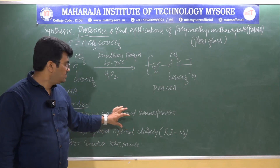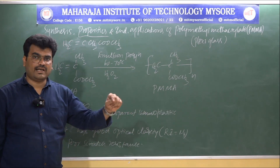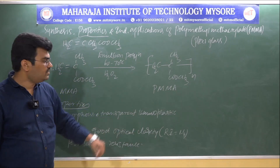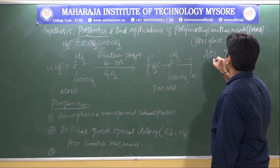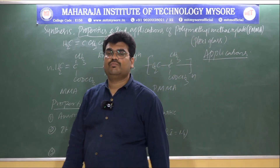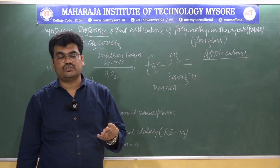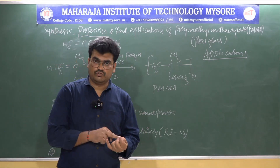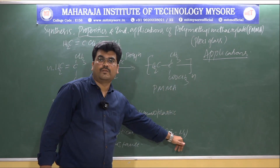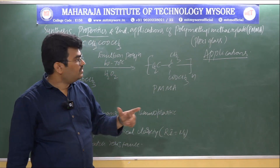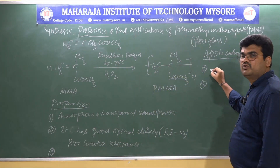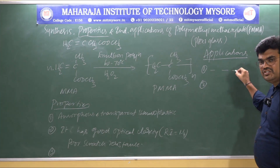One of the most important features of PMMA is its transparent nature and good optical clarity, which is why it is called plexiglass — it can act as a substitute for glass. For this reason, it is used in the manufacturing of automotive lenses, aircraft windows, light fixtures, and signal boards.